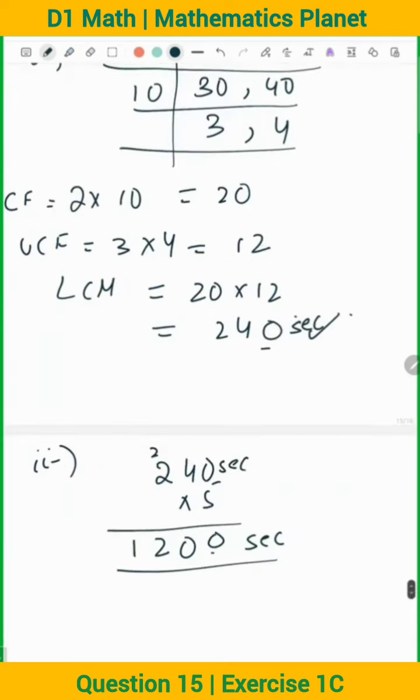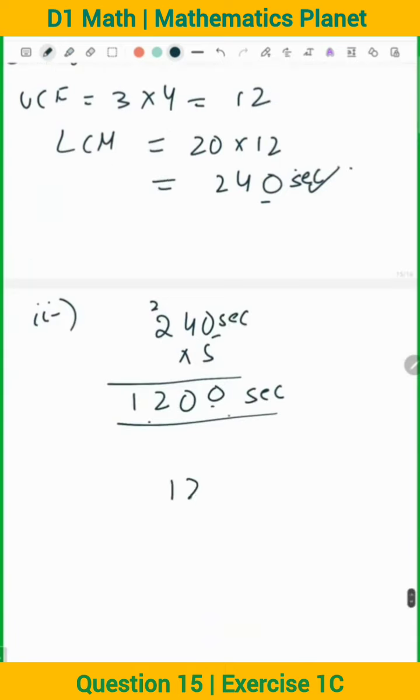So when we have done 240 seconds, the answer is in seconds. But now we need to convert it into minutes. To convert to minutes, we divide by 60. So what will it be? 20 minutes.